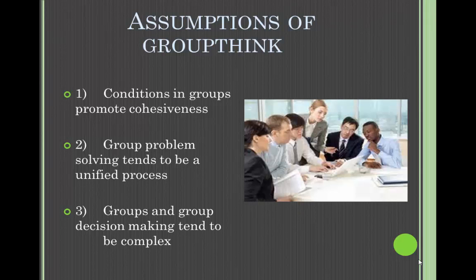There are three assumptions of groupthink. The first assumption is that conditions in groups promote cohesiveness. The second assumption is that group problem-solving tends to be a unified process. And the third is that groups and group decision-making tend to be complex. Each of these components will be discussed further.